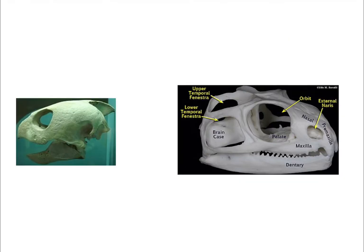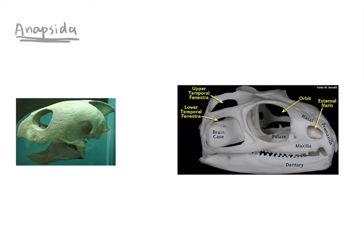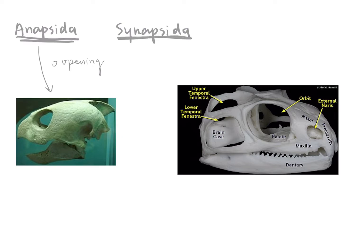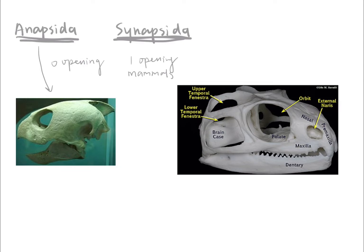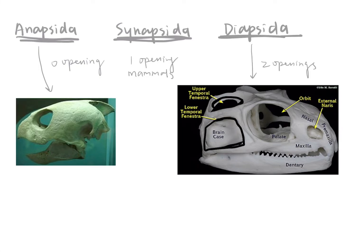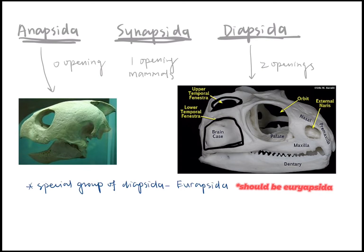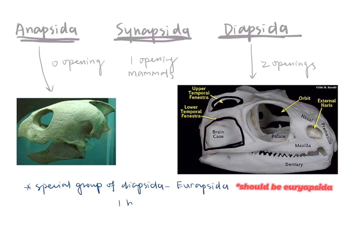Because different groups of animals have different numbers of temporal fenestrae on their skull, we classify them according to the number of openings. For animals belonging to anapsida, there is no opening on their skull. For animals like us — mammals — we belong to a group called synapsida, meaning there is one low opening on our skull. For other animals which have two openings on their skulls, they are classified as diapsida. There is a special group of diapsida that later lose their lower temporal fenestra, and this new group is classified as euryapsida, meaning they have only one high opening on their skull.